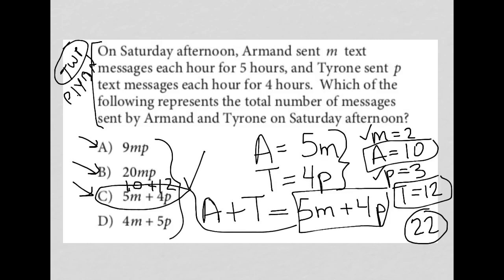And also, if I just wanted to try D out, which I suggest you do anytime you're plugging in your own number, to try all options in case you need to change your numbers around. If I try D, I'd get 8 plus 15, which is also not 22.